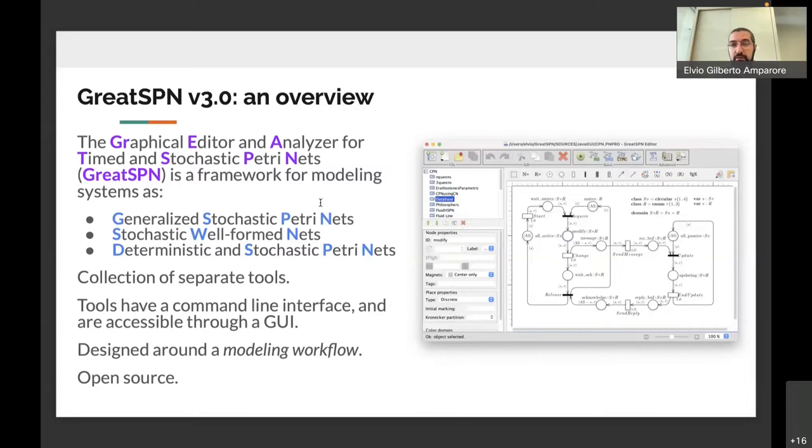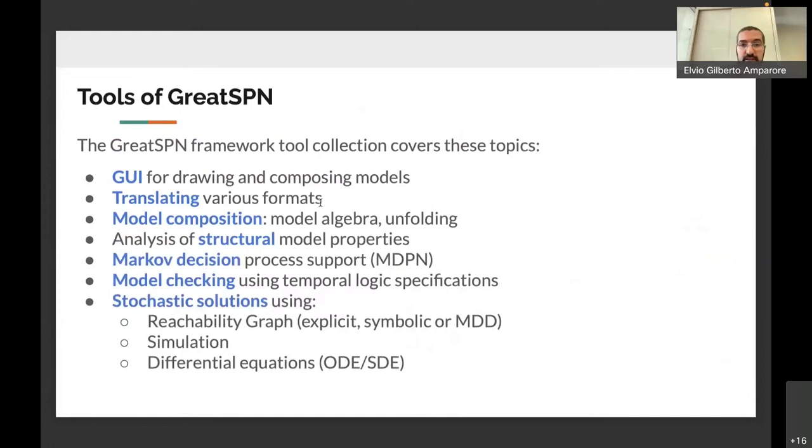The main tools of GreatSPN cover the following topics: there is the graphical user interface for drawing and composing models, then there are various tools for translating input and output formats, then there are tools for model composition, in particular model algebra and unfolding, and several tools for analyzing the structural model properties.